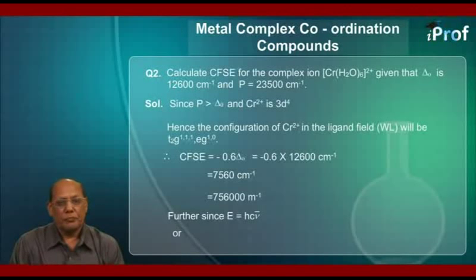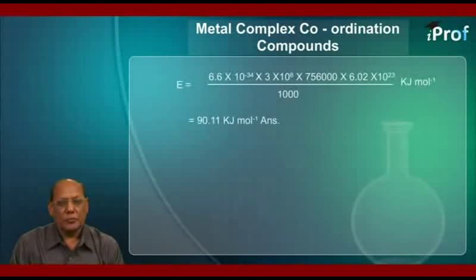Further, since E equals hc times ν̄, substituting the values of hc and the ν̄ and multiplying by Avogadro's number, we can write E equal to 6.6 × 10⁻³⁴ × 3 × 10⁸ × 756,000 × 6.02 × 10²³.